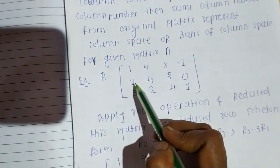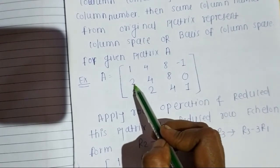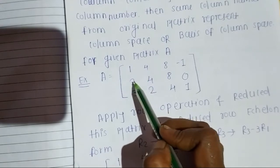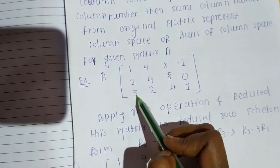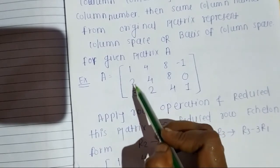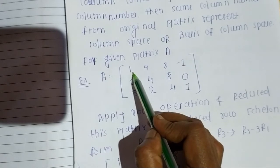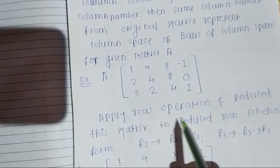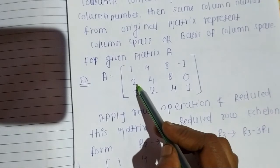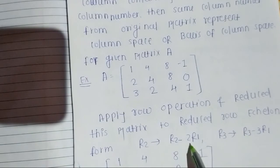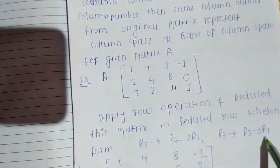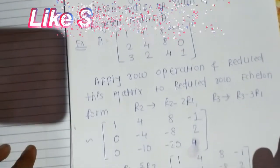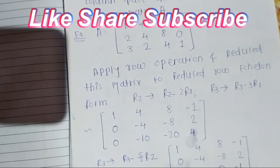We perform row operations: R2 → R2 minus 2×R1, and R3 → R3 minus 3×R1. For R2: 2 minus 2 gives 0 in the first position. For R3: 3 minus 3 gives 0. Applying these row operations makes the first column below the pivot equal to zero.